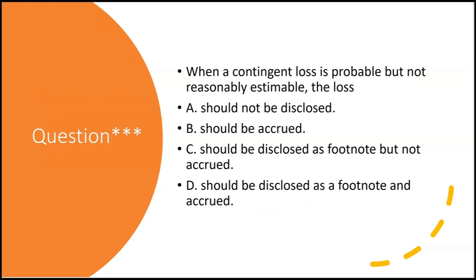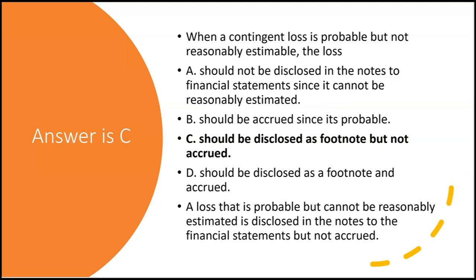Practice question: When a contingent loss is probable but not reasonably estimable, the loss — A: should not be disclosed; B: should be accrued; C: should be disclosed as a footnote but not accrued; D: should be disclosed as a footnote and accrued. If it's probable it must be disclosed, but if it can't be reasonably estimated you can't book it. The answer is C — a probable but not reasonably estimated loss is disclosed in the notes but not accrued.